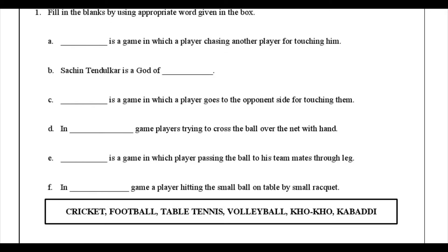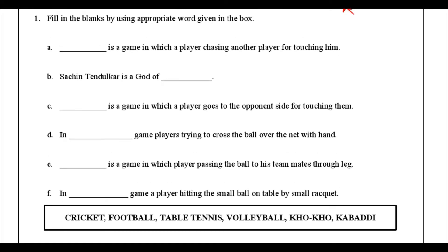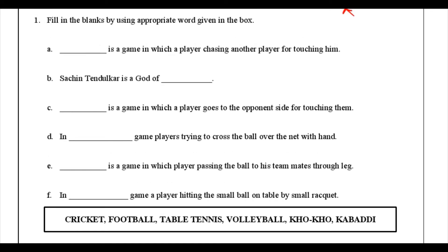The first question is fill in the blanks using appropriate words given in the box. You can see there are some questions, and in the box we have the names of different sports. So all the questions are going to be related to sports only. First one, A1: blank is a game in which a player is chasing another player for touching him.